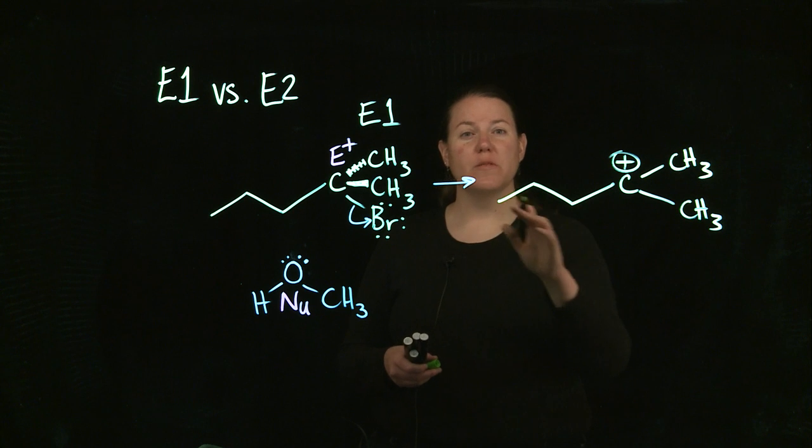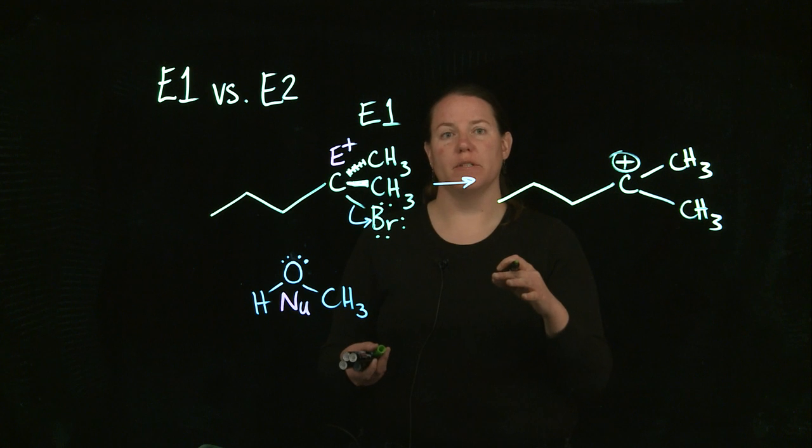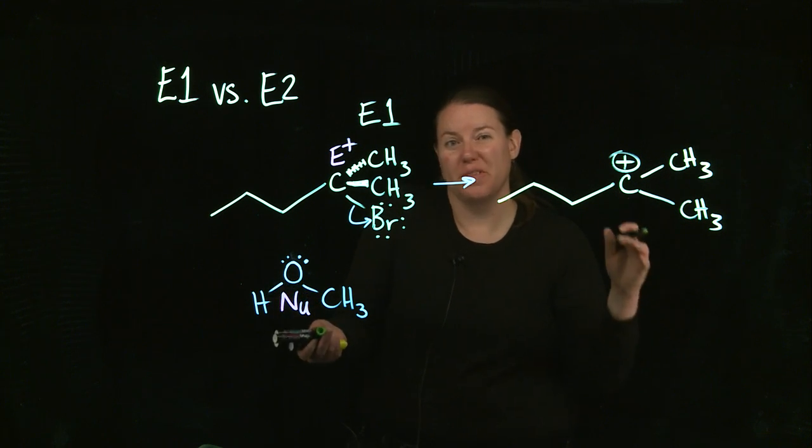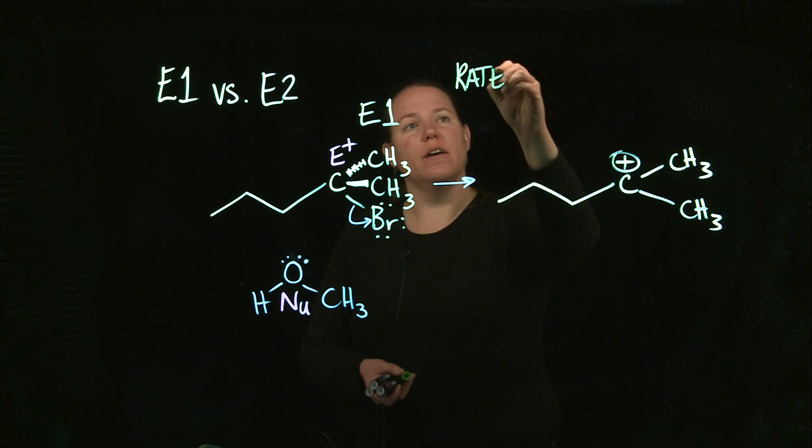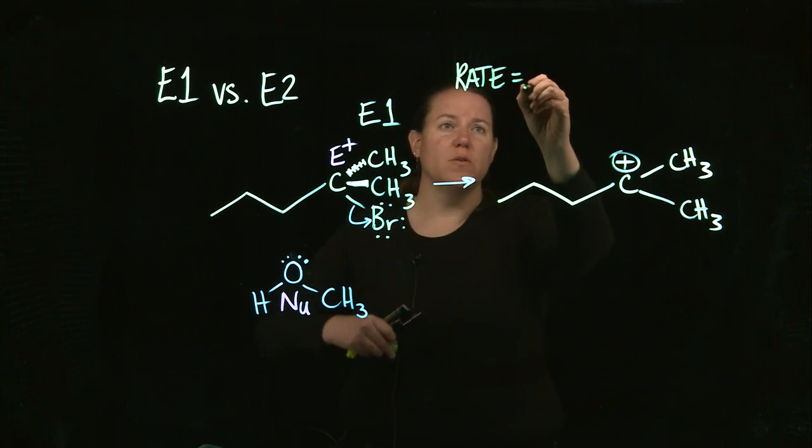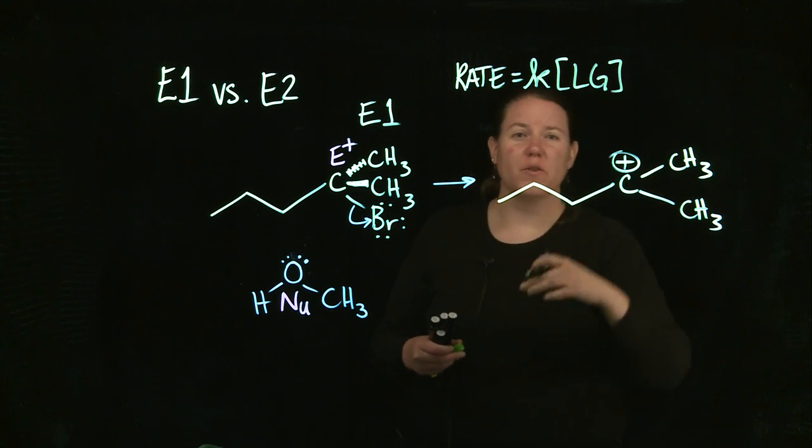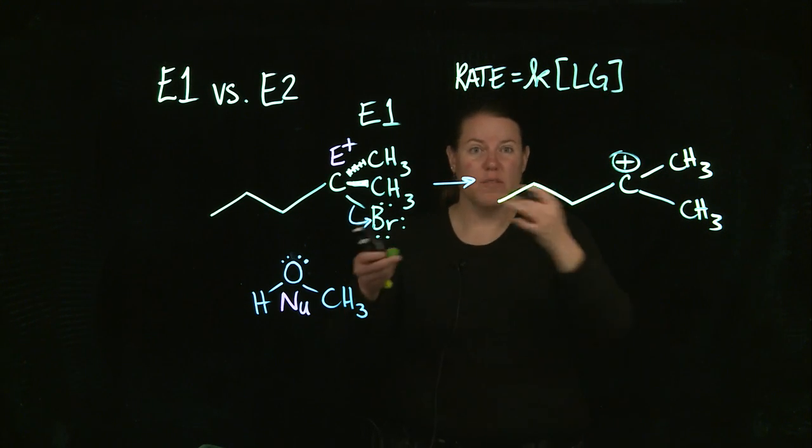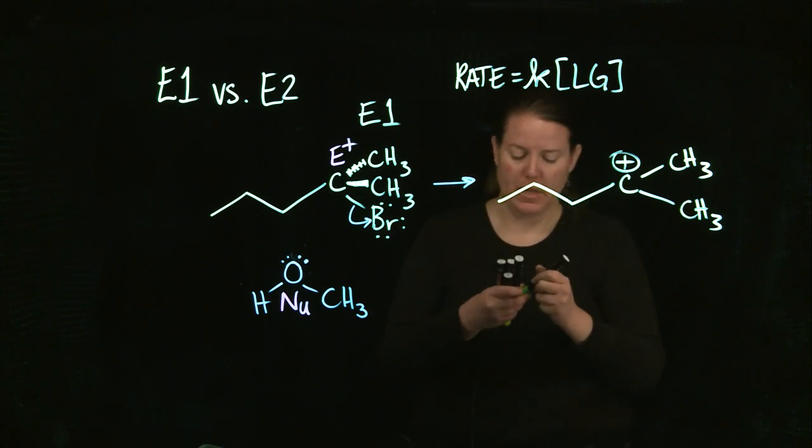So, the reason why this is a one is not because it happens in one step. It actually happens in two or three steps. The reason why it's a one is because the rate law is based off of the slowest step, which in this case is only the leaving group leaving. Leaving group has to go. And once it goes, then everything else can happen.